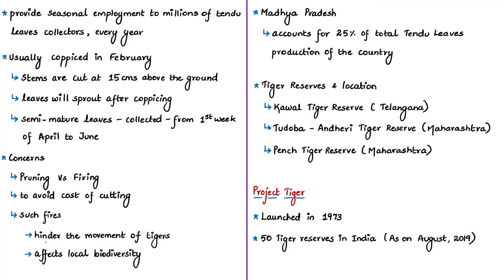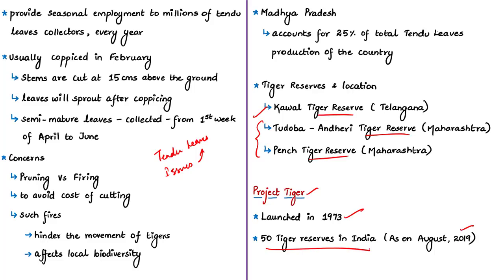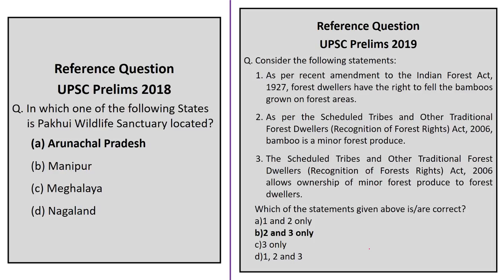To summarize, in this news article we saw about Tendu leaves, the issues surrounding the burning of Tendu leaves in the buffer areas of Kavval Tiger Reserve, and in connection with this, about Tadoba Tiger Reserve and Pench Tiger Reserve. Since we saw three tiger reserves, just know in brief about Project Tiger: it was launched by the Government of India in 1973, and as of August 2019 there are 50 tiger reserves in India. Now have a look at the practice question.